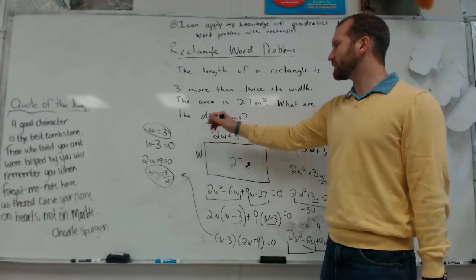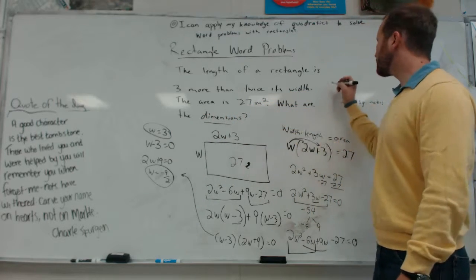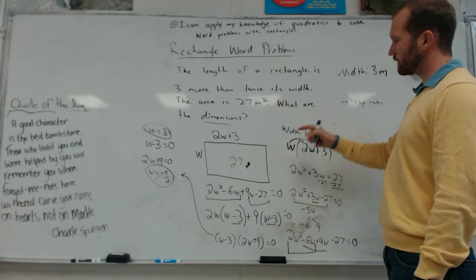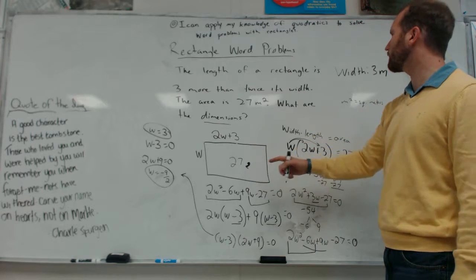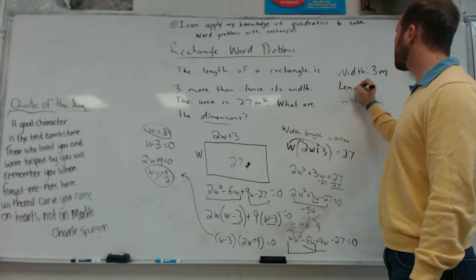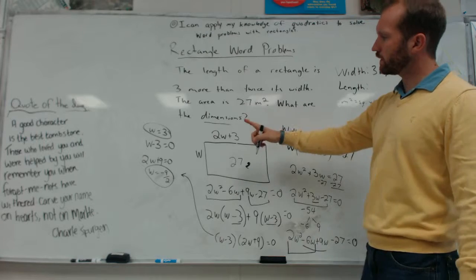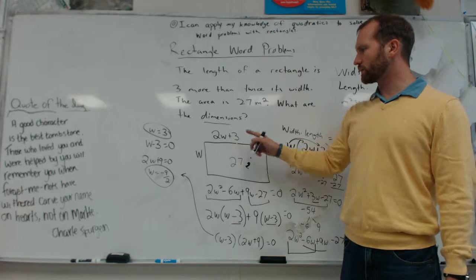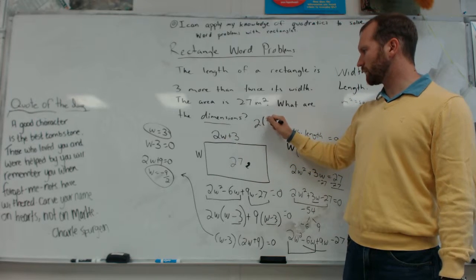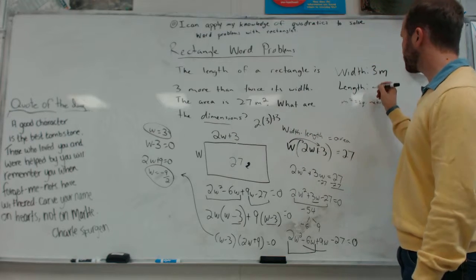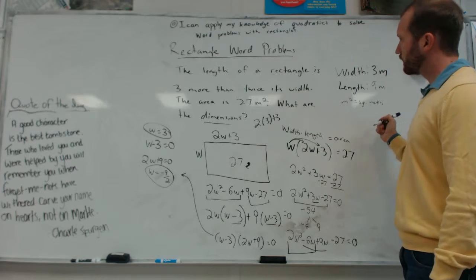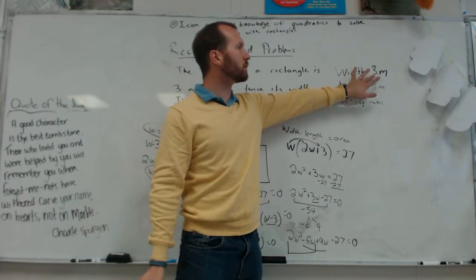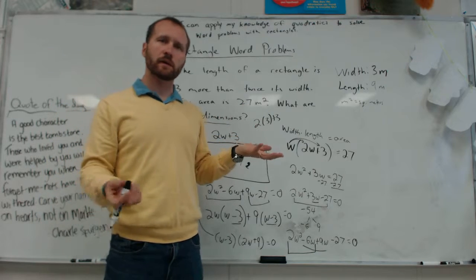Are we done? No. Because they said the dimensions. So we know the width is 3 meters because they originally gave us our unit of meters squared. And then the length is going to be 2 times 3 plus 3, right? So 2 times 3 plus 3, which is 9 meters. 3 times 9 is 27. That's a really quick check you can do. 3 times 9 is 27. So that does check out.